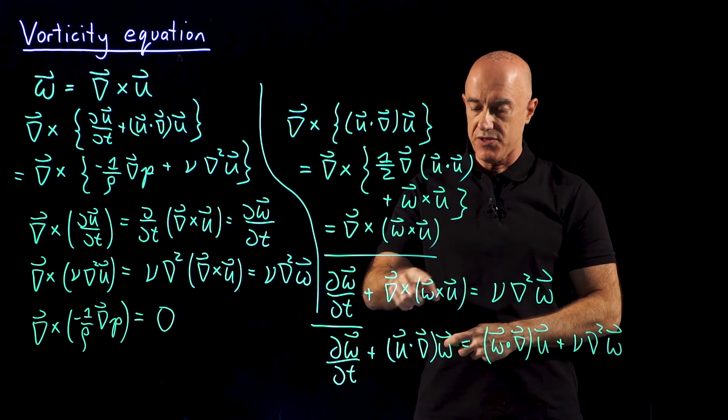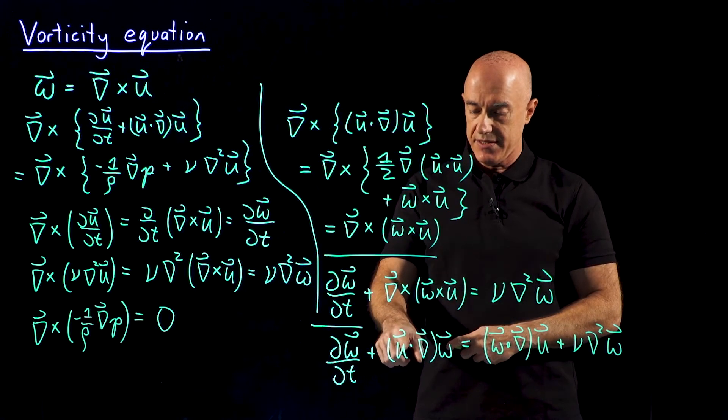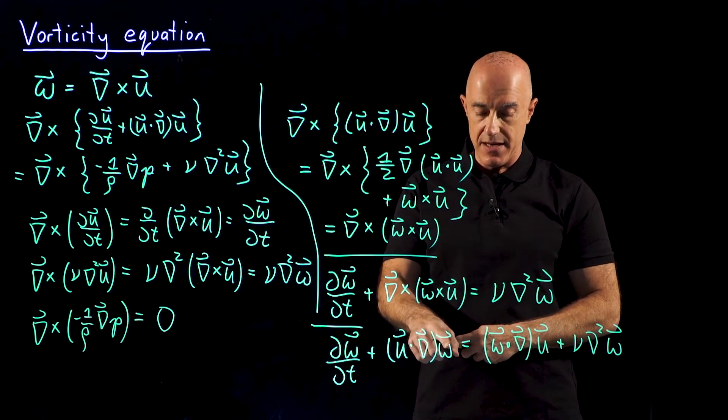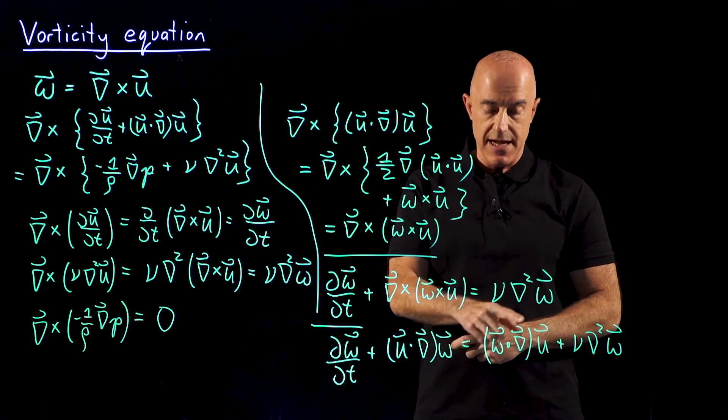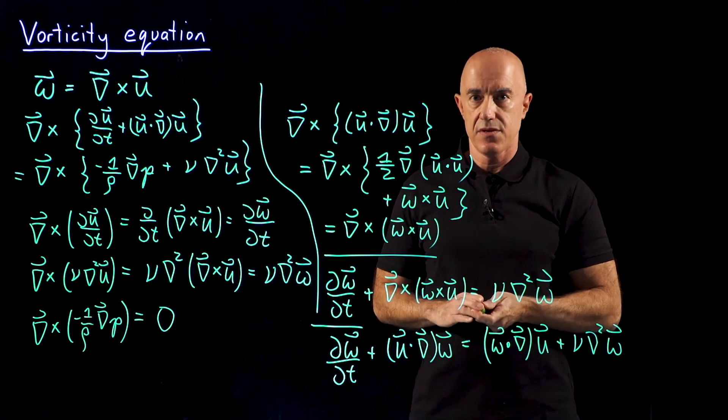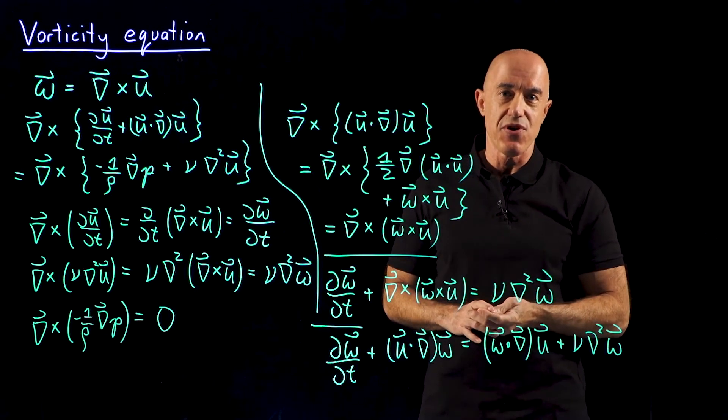So here just del cross omega cross u is equal to u dot del omega minus omega dot del u. You can prove that as part of your homework assignment.